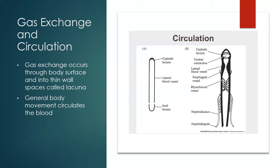One thing that these animals share with segmented worms, the annelids, is that they both have a closed circulatory system. Oxygen and carbon dioxide diffuse through the general body surface into a thin membranous wall space called the lacuna. Adjacent to these walls are blood vessels, which circulate blood around the body. Some species are even known to have hemoglobin circulating in their blood. Since there is no heart, general body movement and locomotion is what gets the blood flowing.